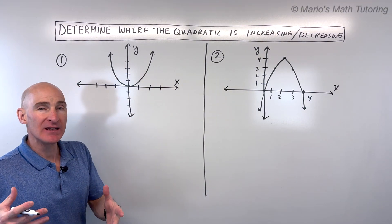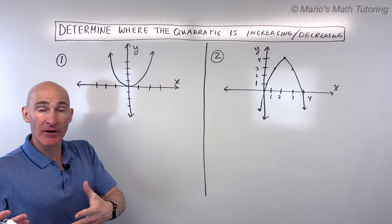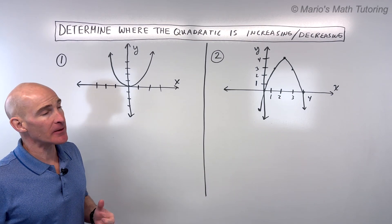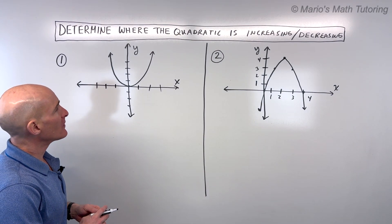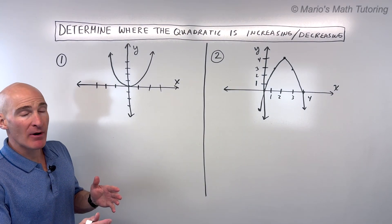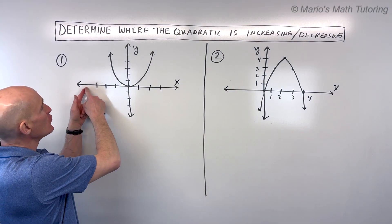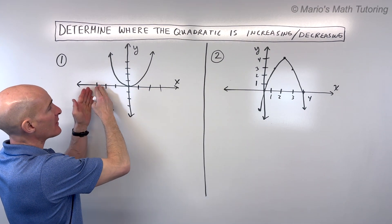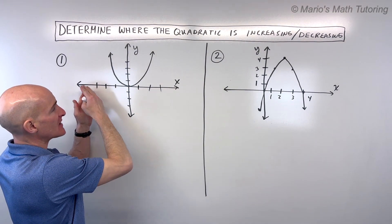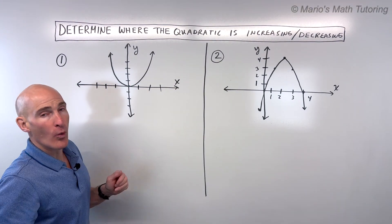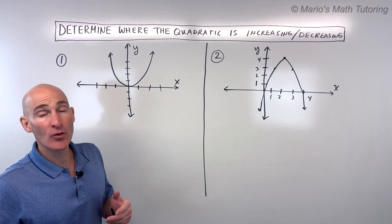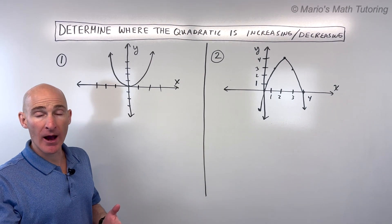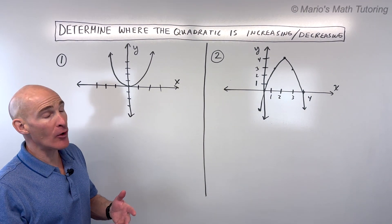What exactly does it mean if the function is increasing or decreasing? What you want to think about is as you're moving along the x-axis from left to right — so as x is increasing — what is happening to the y-values? Are the y-values going up or are they going down?